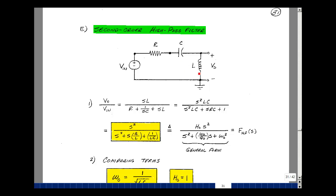Suppose that we interchange the L and C of our second-order low-pass filter, and again find Vout in terms of Vin.